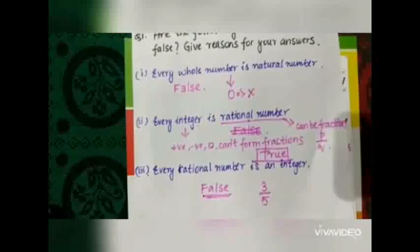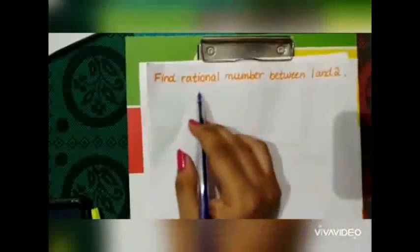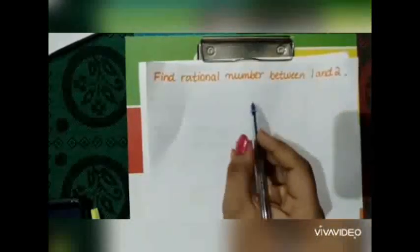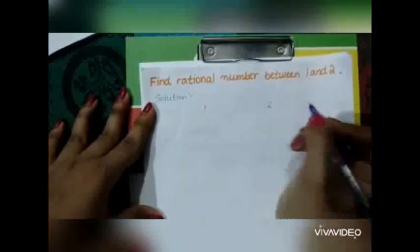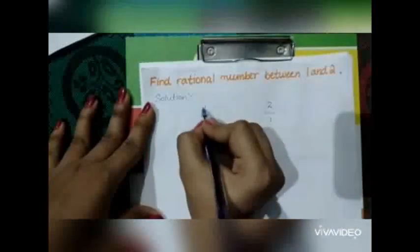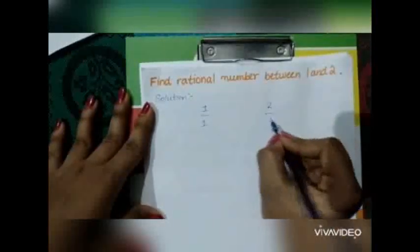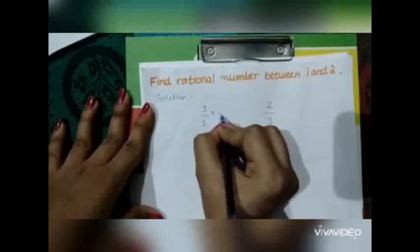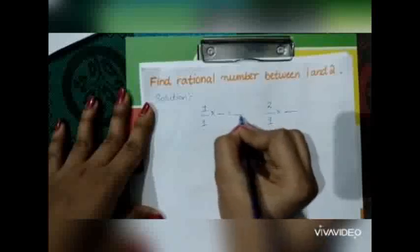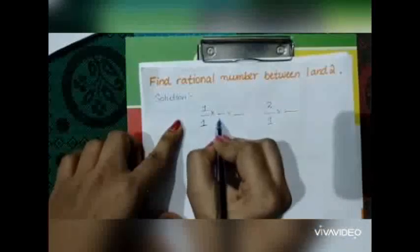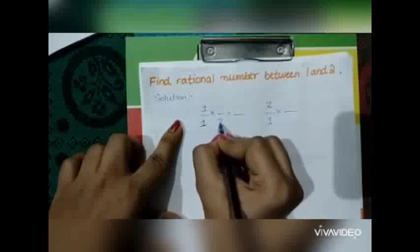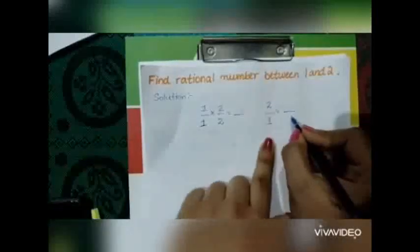Now the second example is: find the rational numbers between 1 and 2. To solve this problem, first write the given numbers with denominator 1. We can write 1 as 1/1 and 2 as 2/1. After that, multiply any number in the numerator as well as in the denominator. Let us take 2, and multiply the same number with both fractions.